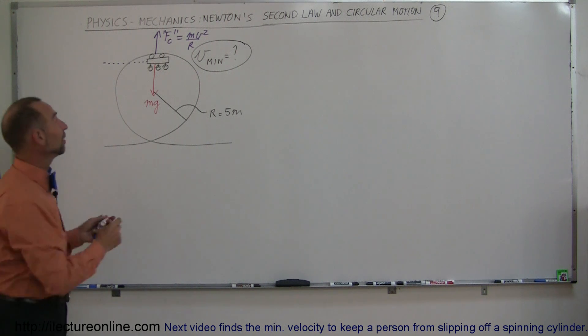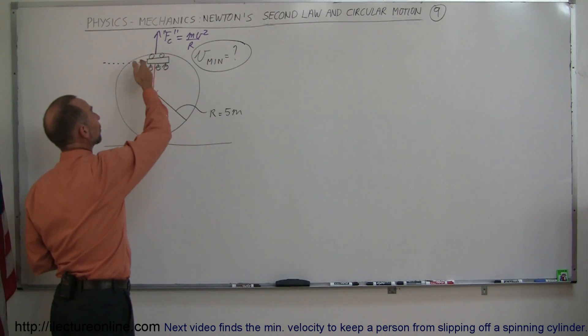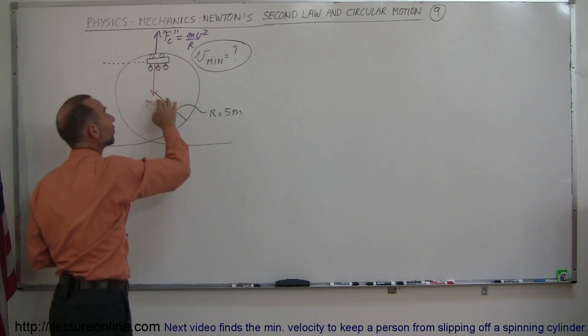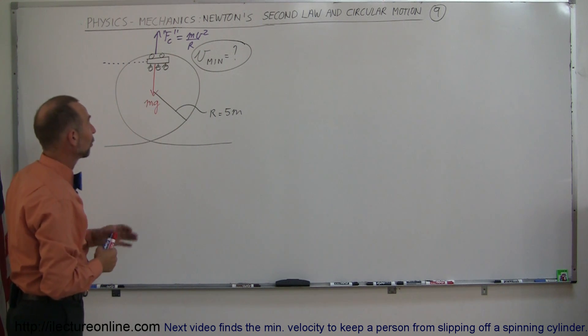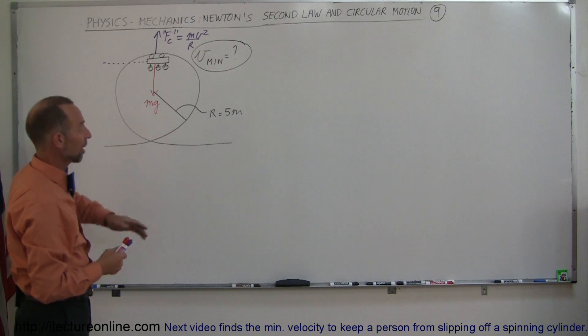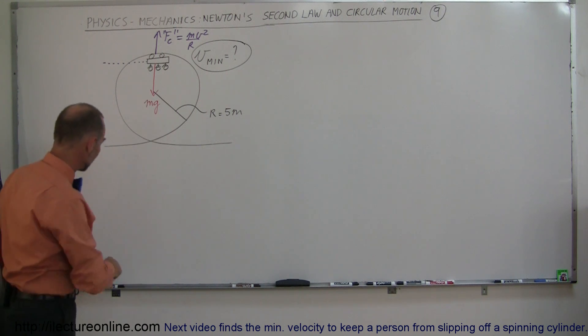So if this is bigger than this, the car will stay on the tracks. If this is smaller than this, the car will fall down and not stay on the track. That's why we're going to find the minimum velocity by setting those two equal to each other.